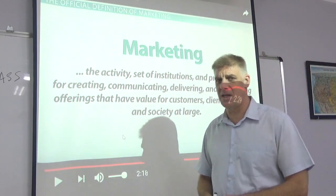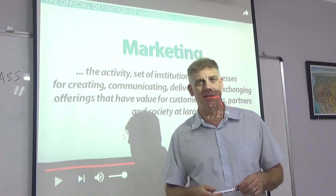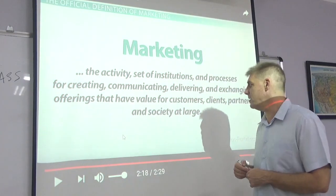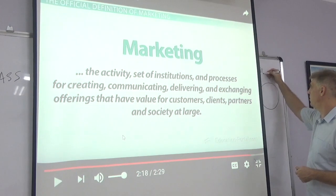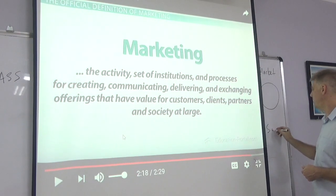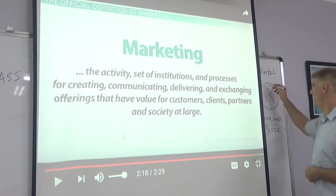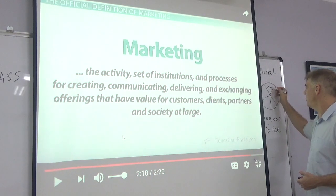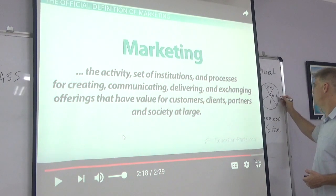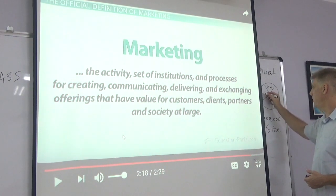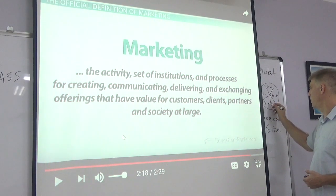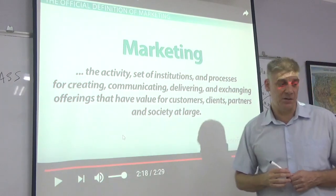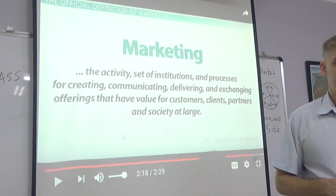Segment — to segment something means to cut it into slices, like a pizza. Usually we think about market share as a pie. Here's a market, and the market has its size — maybe 100,000 people. Then we can divide the market up into different age groups: 65 plus, 40 to 65, 30 to 40, under 18, and 18 to 30. You can divide it up by age — those are segments of the market.